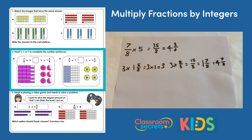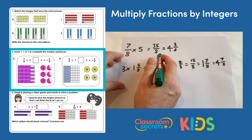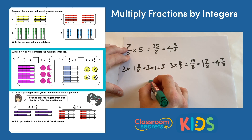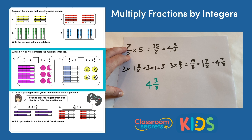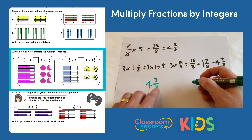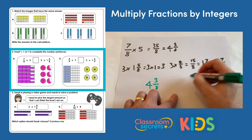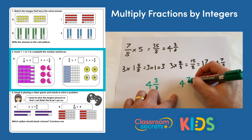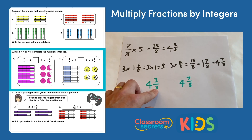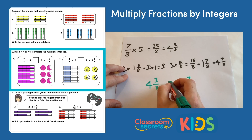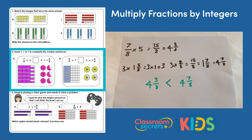So looking at the question, seven eighths multiplied by five gave four and three eighths on the left, and three multiplied by one and five eighths gave four and seven eighths on the right. Four and three eighths is less than four and seven eighths, so the answer is less than.